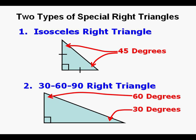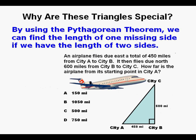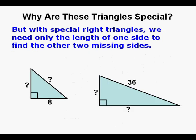Now why are these triangles special? By using the Pythagorean theorem we can find the length of one missing side if we have the length of two sides, but with special right triangles we need only the length of one side to find the other two missing sides.